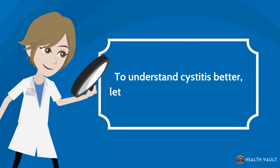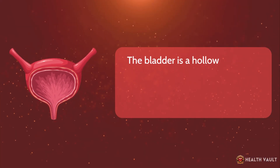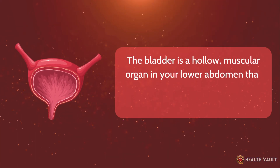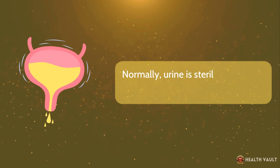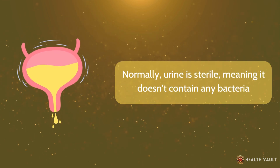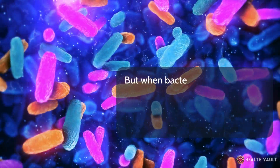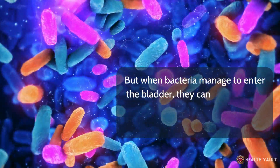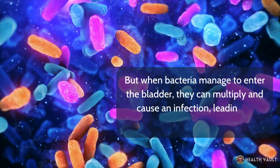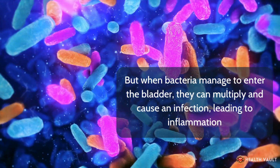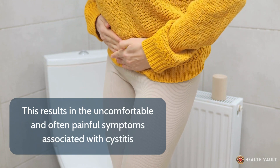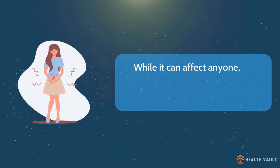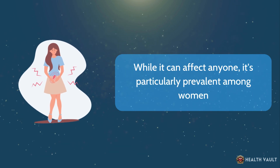To understand cystitis better, let's dive into the anatomy a bit. The bladder is a hollow, muscular organ in your lower abdomen that stores urine before it's excreted from the body. Normally, urine is sterile, meaning it doesn't contain any bacteria. But when bacteria manage to enter the bladder, they can multiply and cause an infection, leading to inflammation. This results in the uncomfortable and often painful symptoms associated with cystitis. While it can affect anyone, it's particularly prevalent among women.